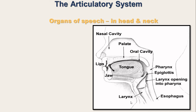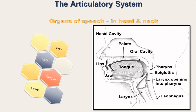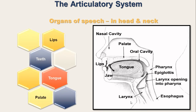The articulatory system consists of a few organs in our head and neck. These organs are called the organs of speech. The organs include the lips, the teeth, the tongue, and the palate. Apart from this we have the pharyngeal cavity, the back wall of the pharynx, and the larynx.